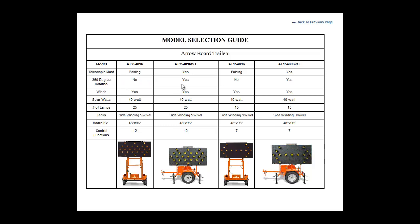Those with the telescopic mast also offer 360-degree rotation. This makes it extremely easy to set up because you don't have to line up the trailer perfectly with the traffic. You can park the trailer in a single location and rotate the board to point in the direction that is needed.